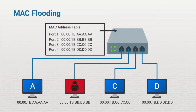Suppose an attacker wants to see all data passing through this switch. Considering that a switch's normal operation only sends data to the intended recipient, the attacker would only be able to see data destined for his or her workstation, which is very unlikely. But the attacker can flood the switch with fake MAC address information and fill up the MAC address table. Once the switch can no longer store any more MAC addresses, the switch enters a fail open mode and behaves the same as a network hub or layer one device.